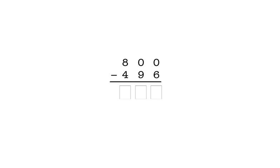We always start with the ones place. We have zero minus six, so we must take a one from the tens place to make ten ones. But we don't have a one in the tens place. Before we can take a one from the tens column, we must take a one from the hundreds column to make ten tens. To show that we took a hundred, we cross out the eight in the hundreds column and enter a seven above it.